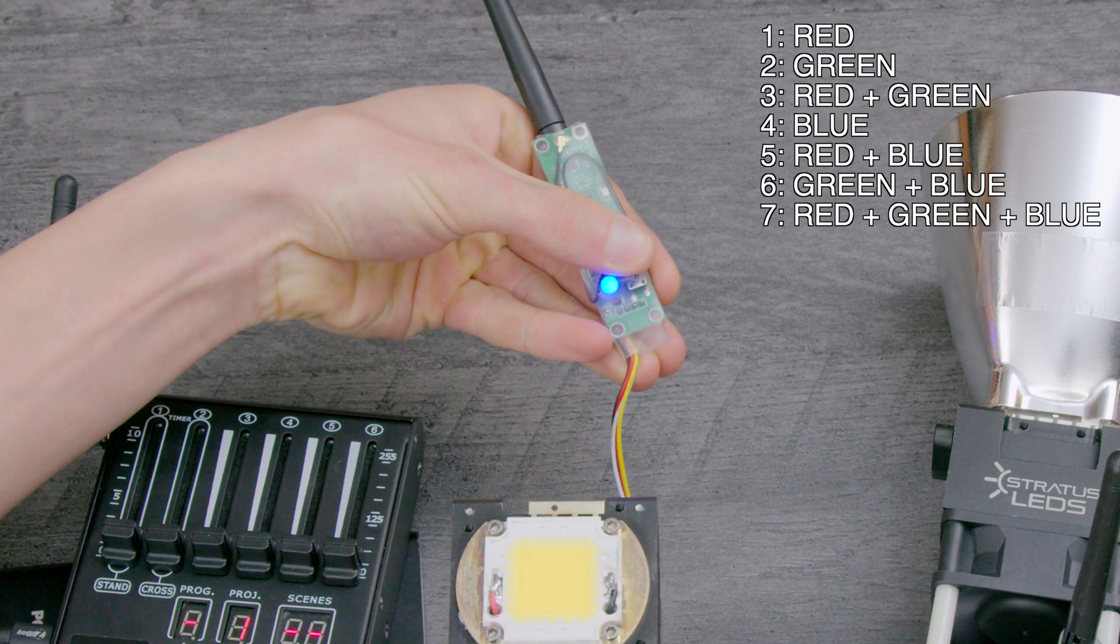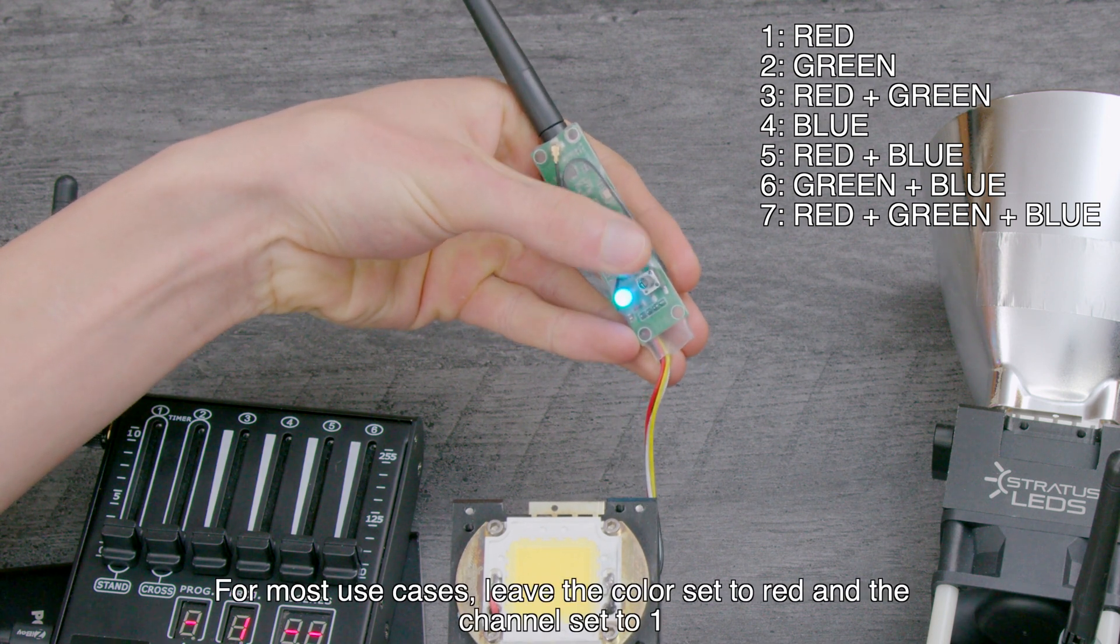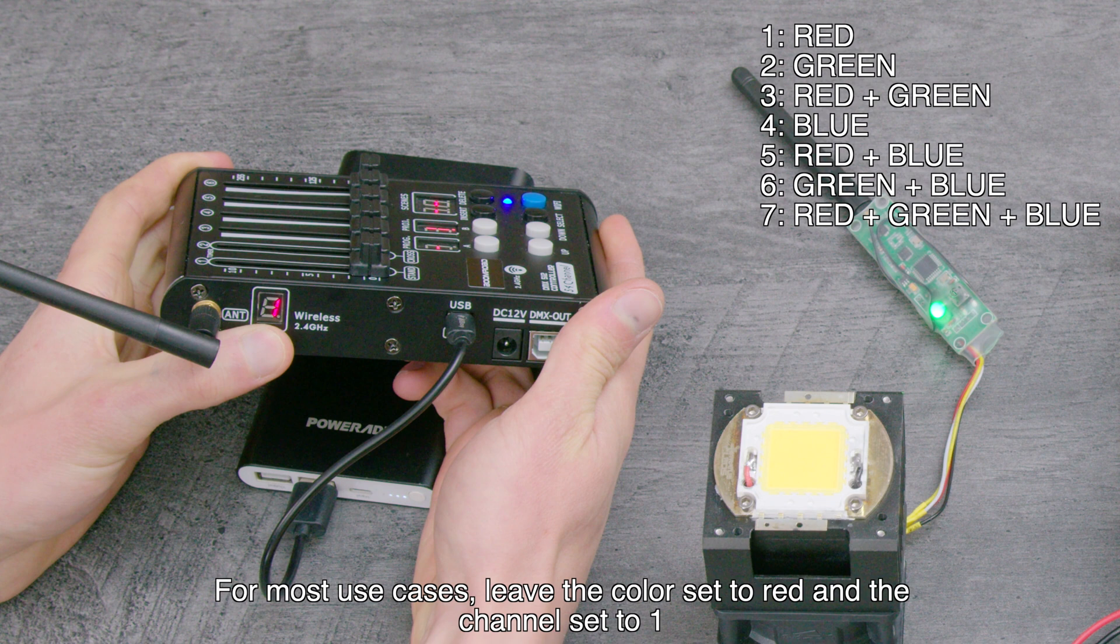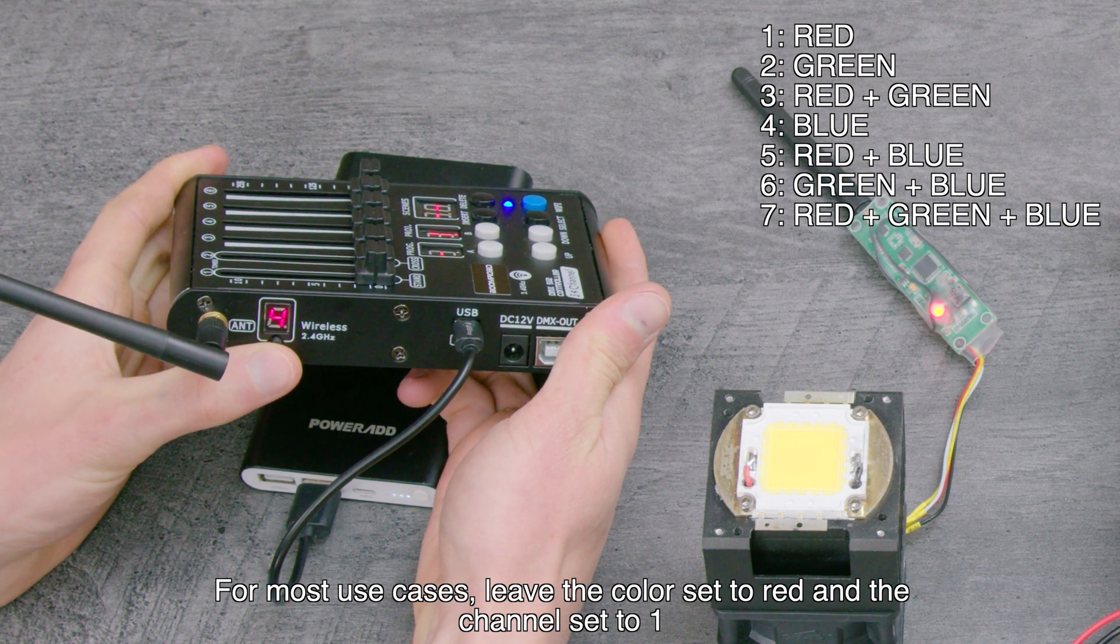This is useful for when multiple groups of transceivers are used simultaneously. The colors correspond to the following channels, which can also be set on the wireless DMX console. For our purposes, we'll just keep it set to red.